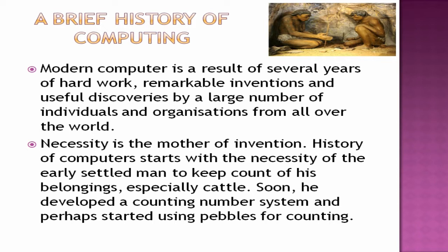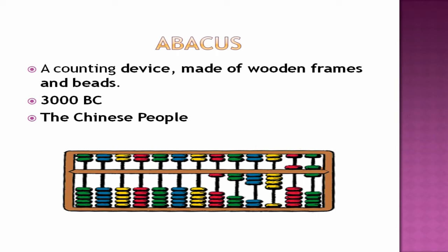This is the brief history of computing. Man started developing counting devices and calculating devices, which led to the modern computer today. Now first we will see Abacus. It is a counting device — the first computing device. It is a counting device made of wooden frames and beads. It was developed by Chinese people in 3000 BC. We are still using Abacus for calculating today. People learn Abacus calculating even nowadays.